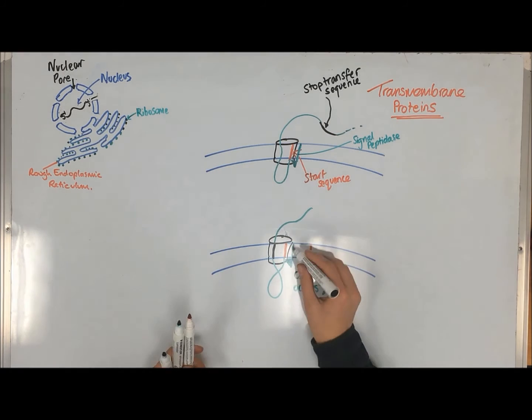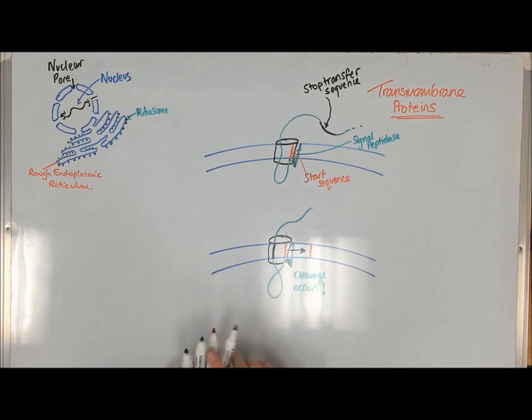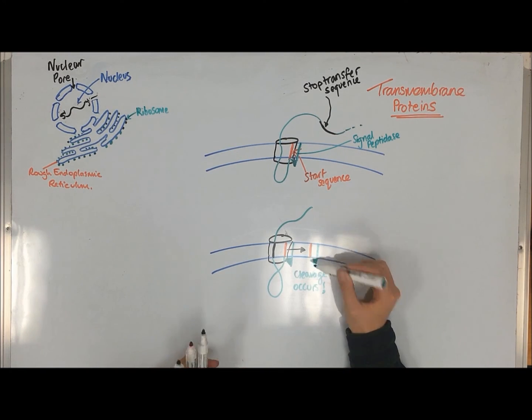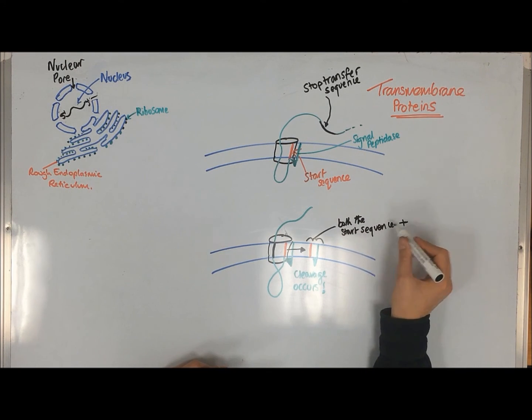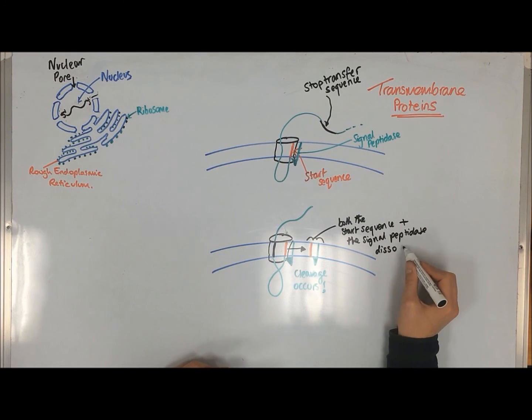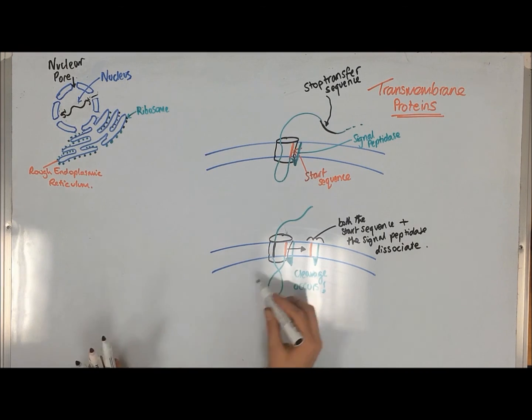More complex transmembrane proteins have numerous start-stop regions and both hydrophobic regions move laterally into the membrane. The start regions initiate translocation and the stop regions initiate the release of the peptide. This allows these peptides to be stitched into the membrane as they are being synthesized.